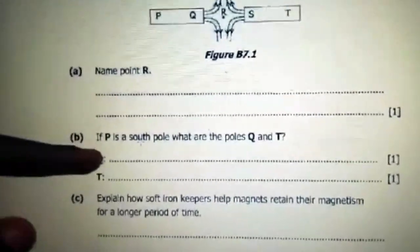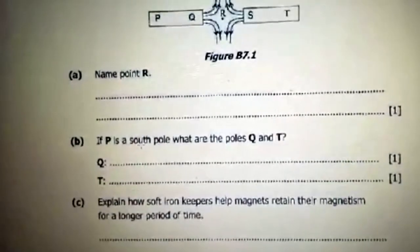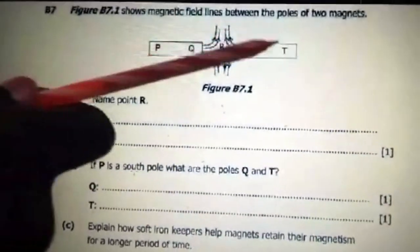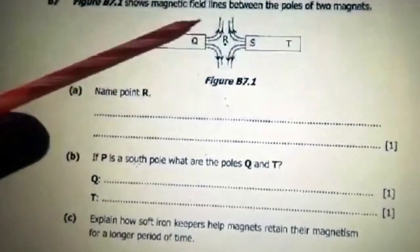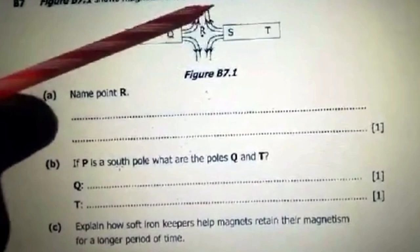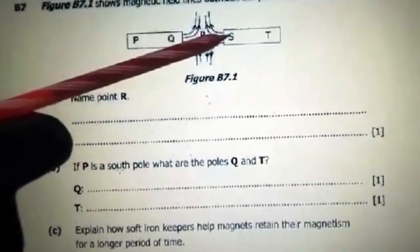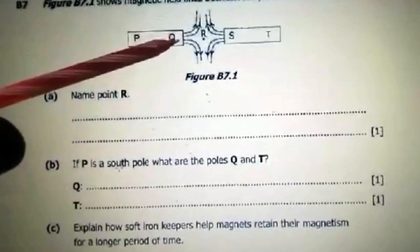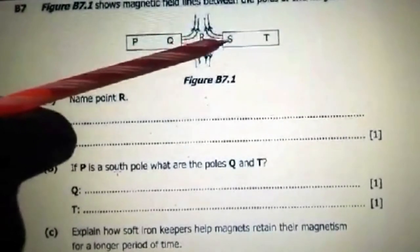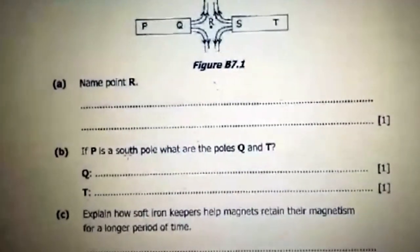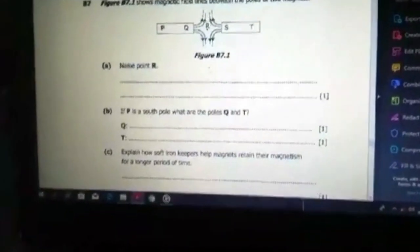At point R, that's the neutral point. If P is a south pole, what are the poles Q and T? If this is the south pole, repulsion is taking place, meaning this is the north pole. If this is a repulsion, then Q is the north pole and T is also the south pole, just like P.